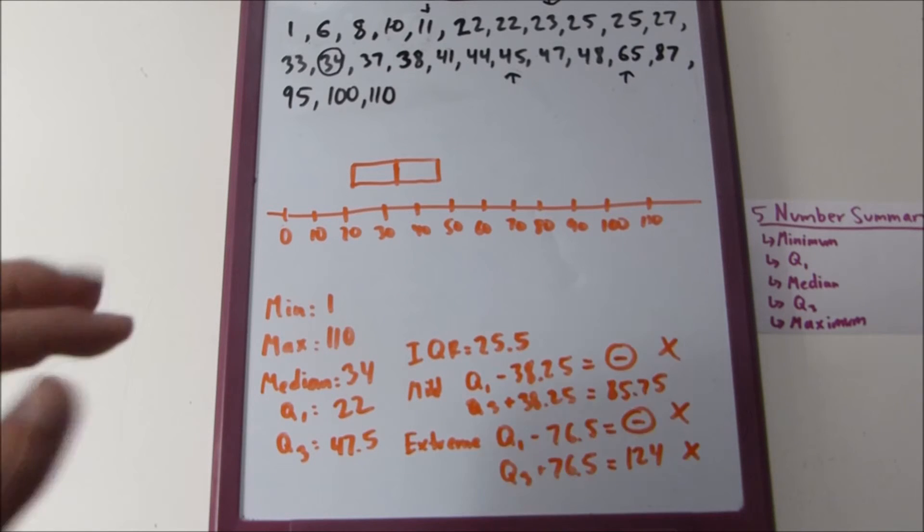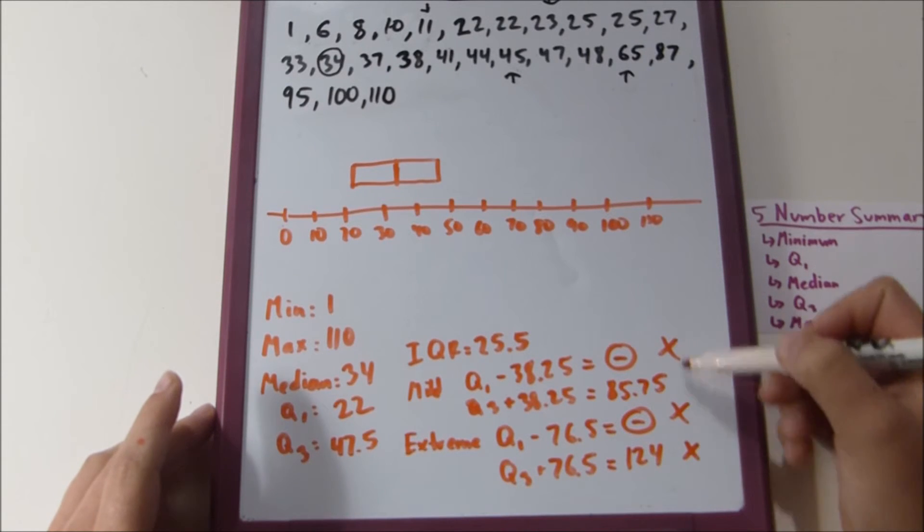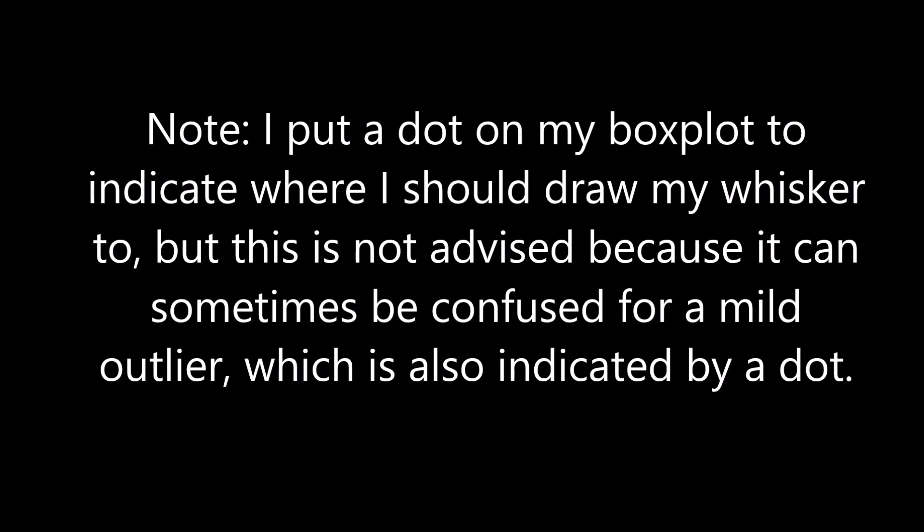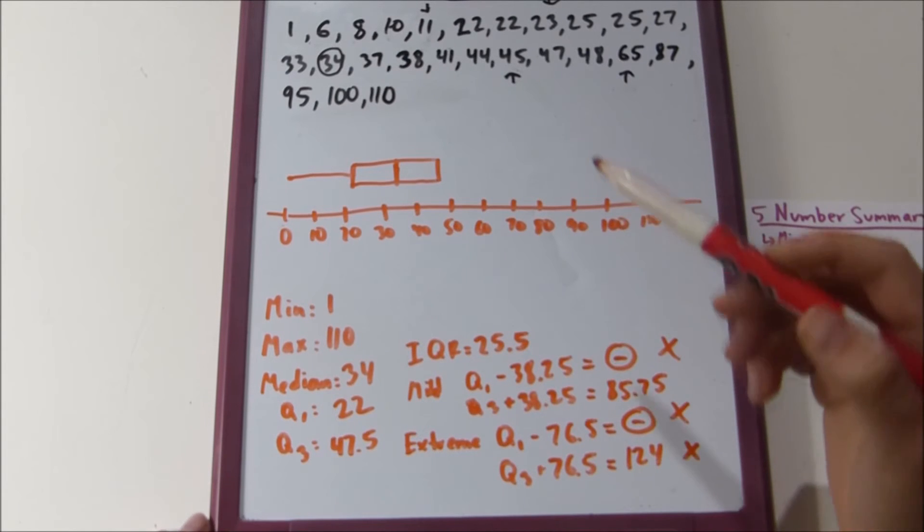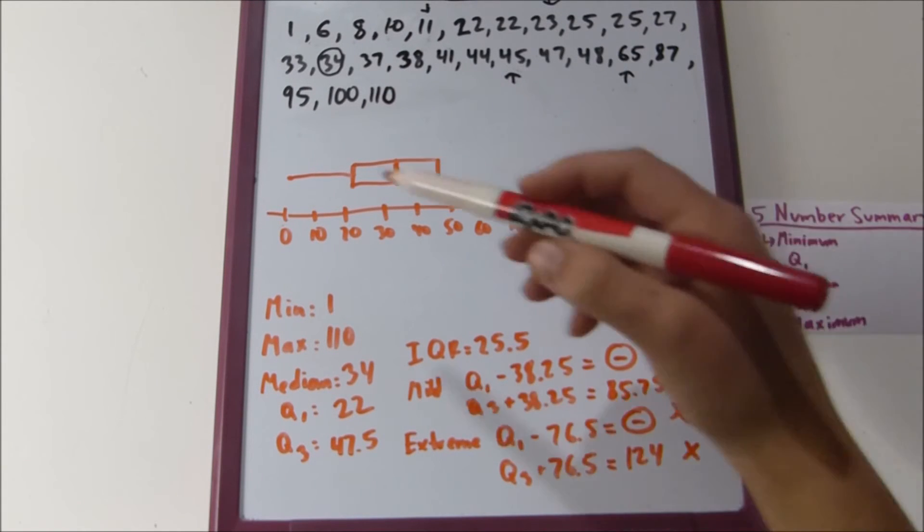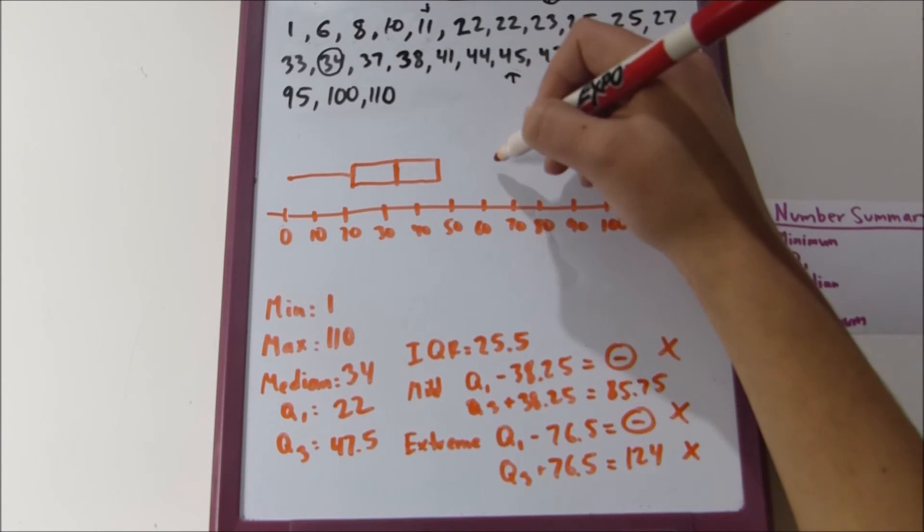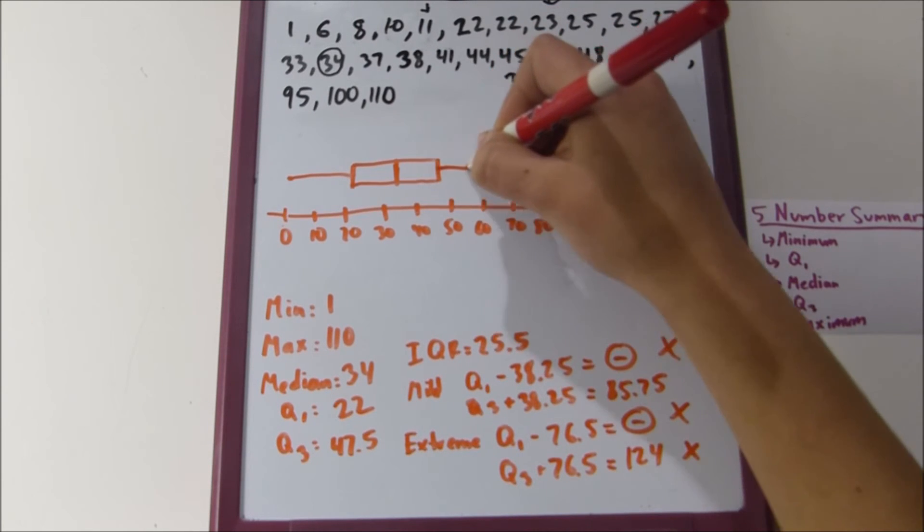And then what you do is you draw the whisker. That's why these box plots are sometimes called box and whisker plots. The whisker should be to the most extreme observation that is not an outlier. So, since we've determined that we don't have any outliers on the left, we can draw all the way to one. Put a dot there and then draw that whisker. And the largest value that's not an outlier to the right is the value that's smaller than eighty-five point seventy-five, which is sixty-five. Sixty-five. There we go.